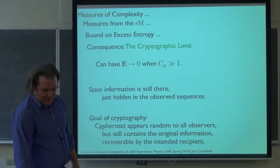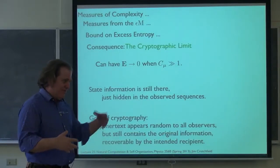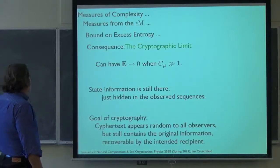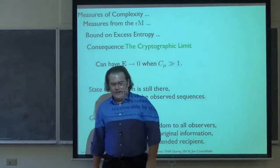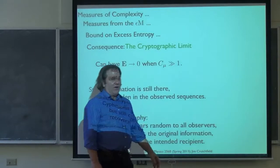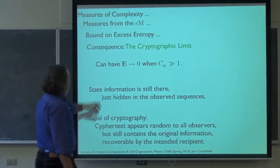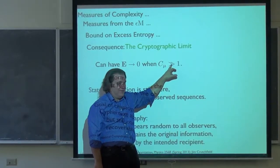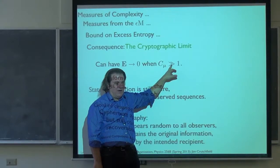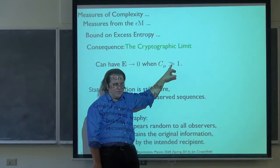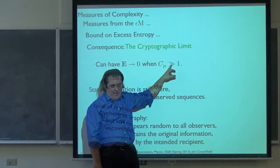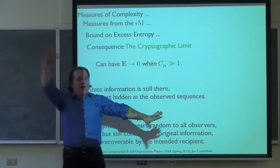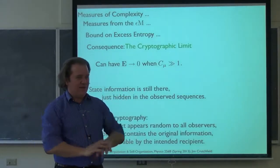So this extreme interpretation of the C_mu bound on E is what I call the cryptographic limit. There are whole families of processes — infinite numbers — where the observed mutual information is arbitrarily close to zero and the internal state information is arbitrarily large. I kept talking about what the past-future mutual information was as some kind of memory — I probably even slipped and said 'stored information,' though I usually said 'apparent stored information.' It's what you get in the observed symbols. In this cryptographic limit, there's an arbitrary distance between what you observe in your measurements and how the process is structured internally.